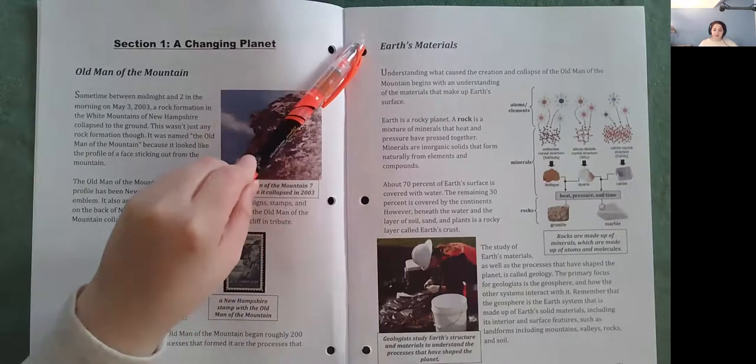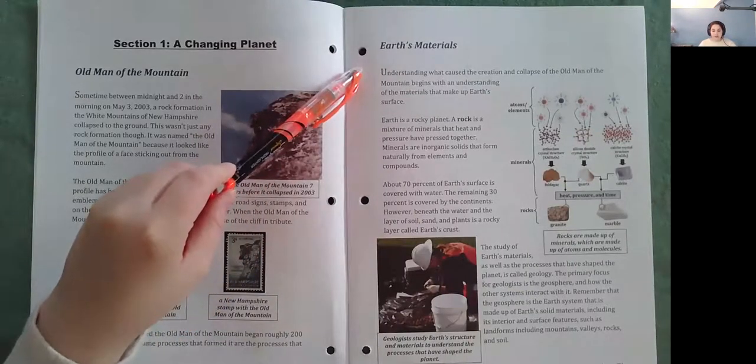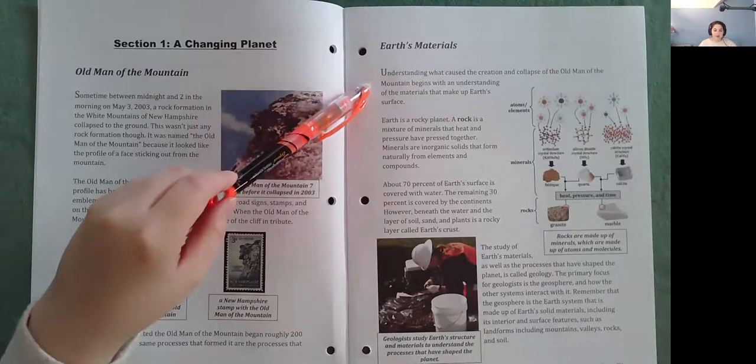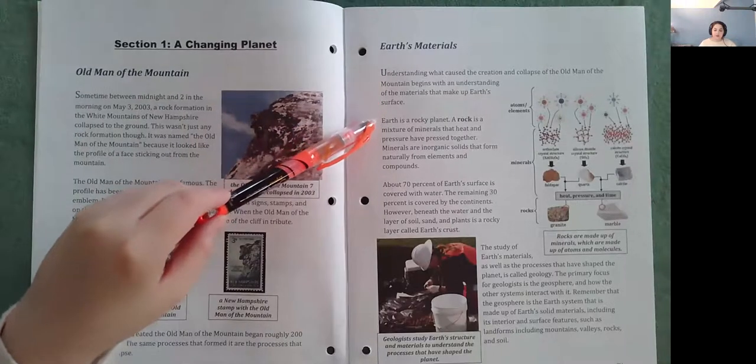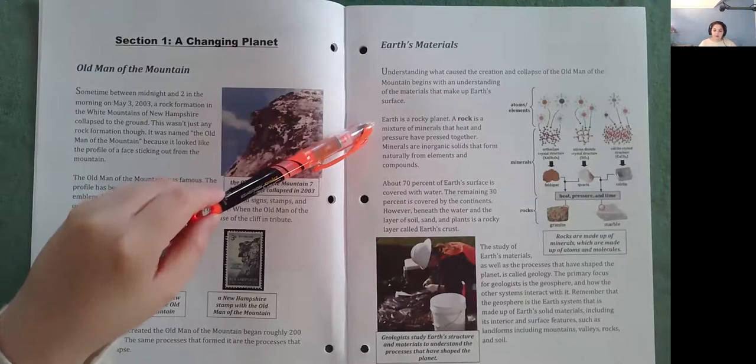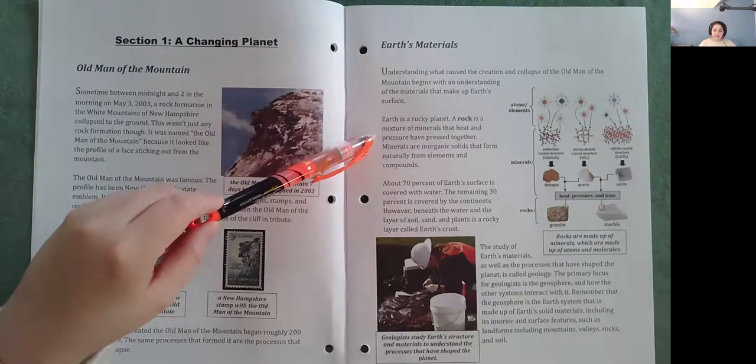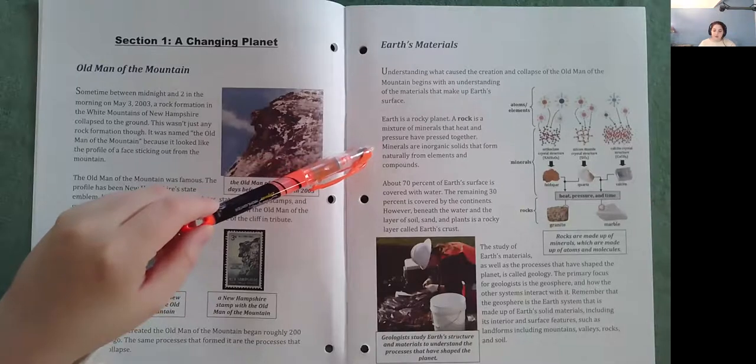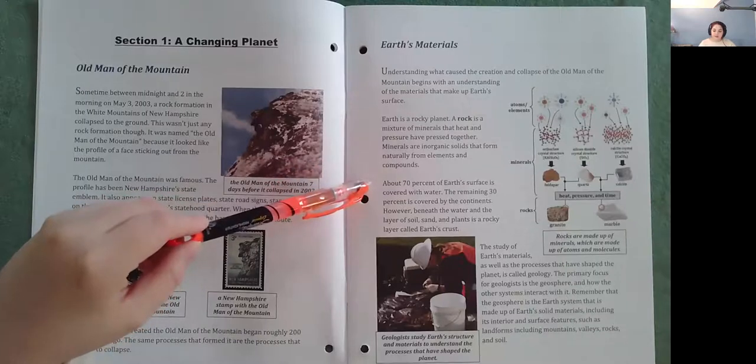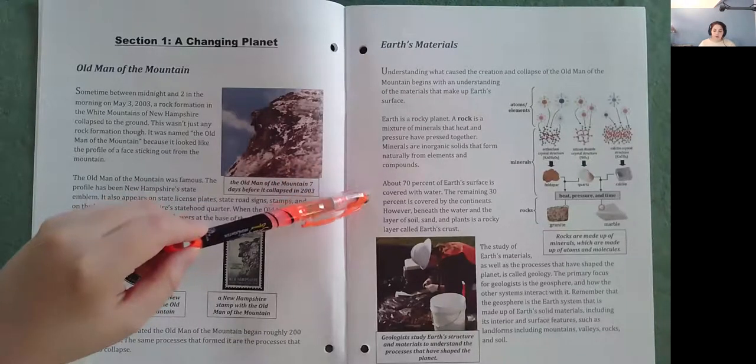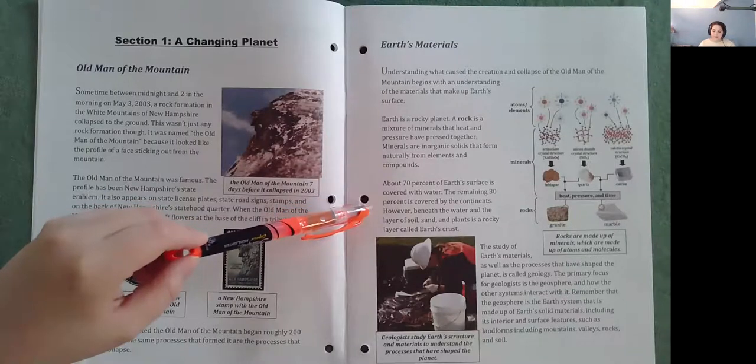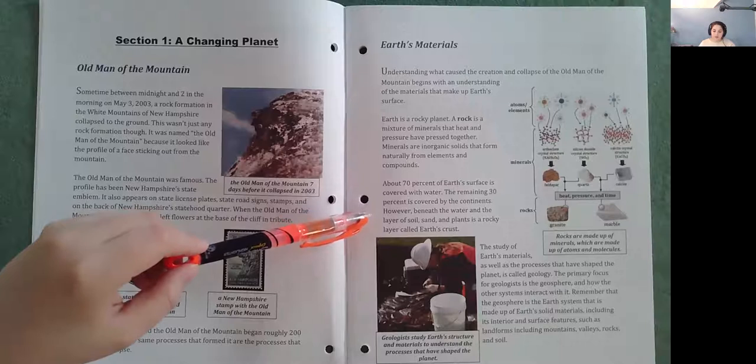Earth's materials. Understanding what caused the creation and collapse of the Old Man of the Mountain begins with an understanding of the materials that make up Earth's surface. Earth is a rocky planet. A rock is a mixture of minerals that heat and pressure have pressed together. However, beneath the water and the layer of soil, sand, and plants is a rocky layer called Earth's crust.